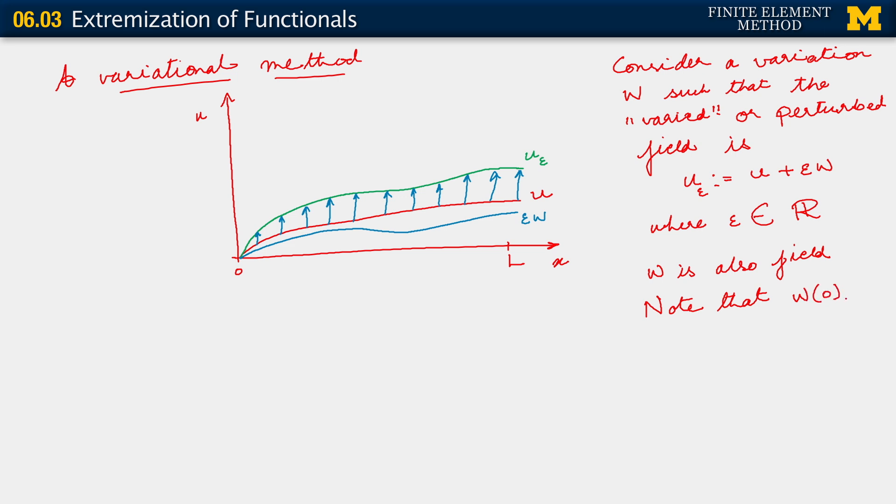Note, definitely the way I've drawn it at least, w of 0 equals 0. With all these leading hints, you should now, given the fact that w is itself a field which satisfies w at 0 equals 0, it should tell you something about the space that w belongs to.